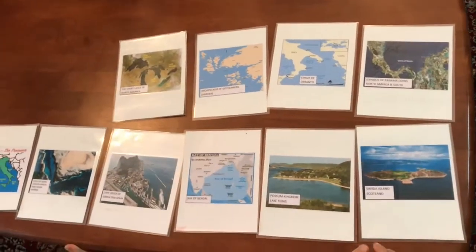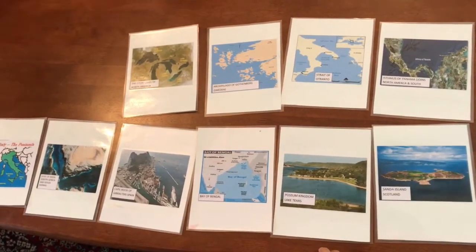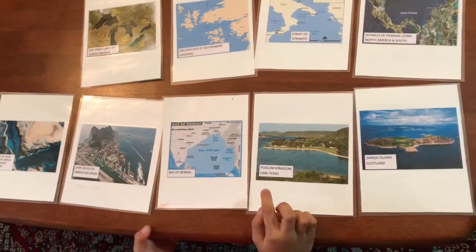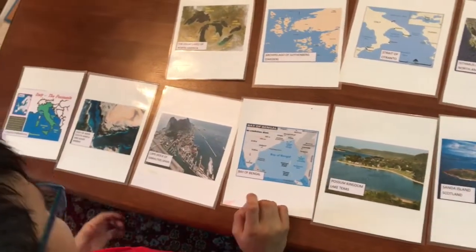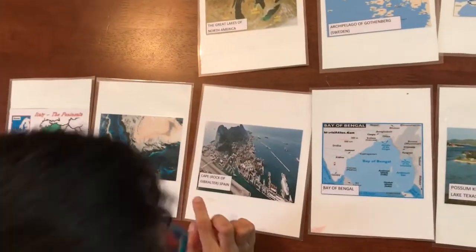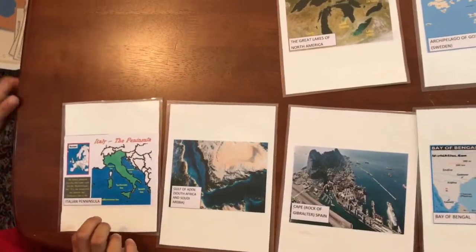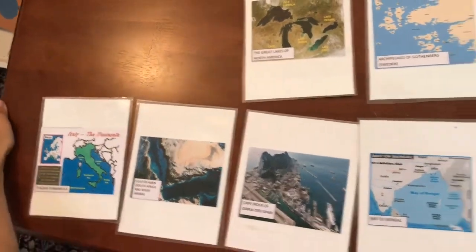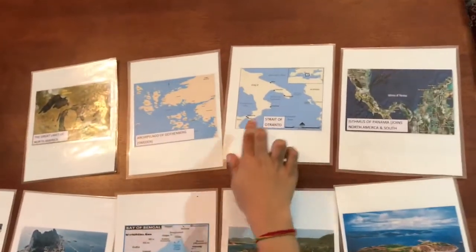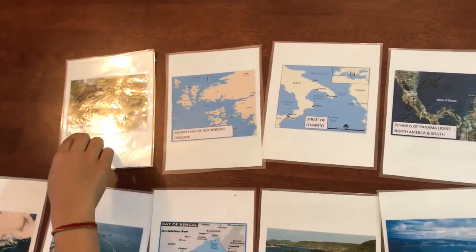See the real versions of landforms. Island, Lake, Bay of Bengal, Cape, Gulf, Peninsula, Isthmus, Strait, Archipelago, System of Lakes.